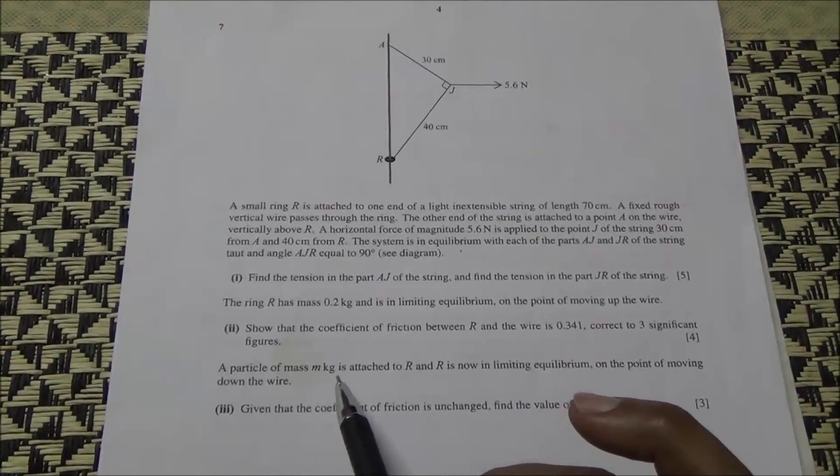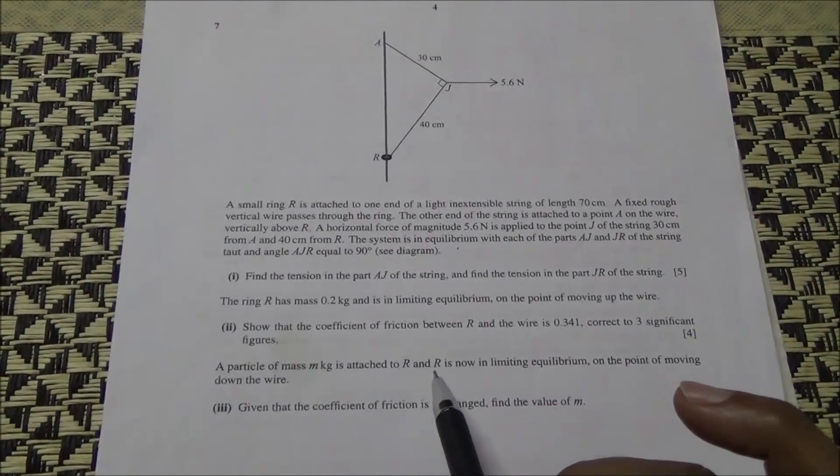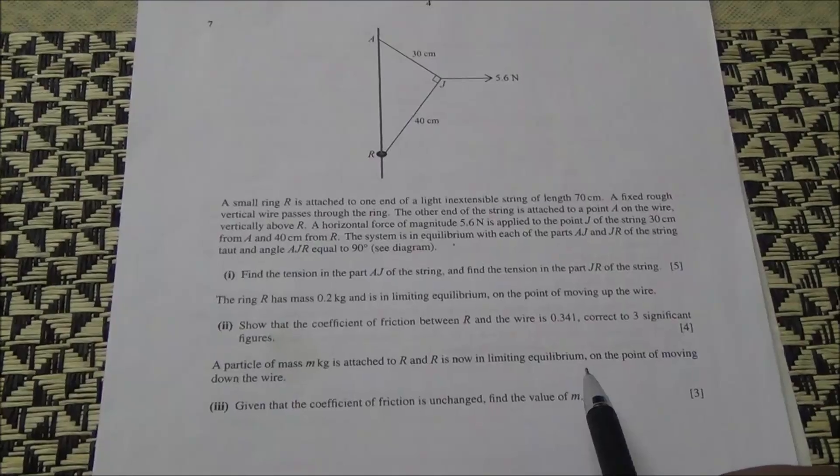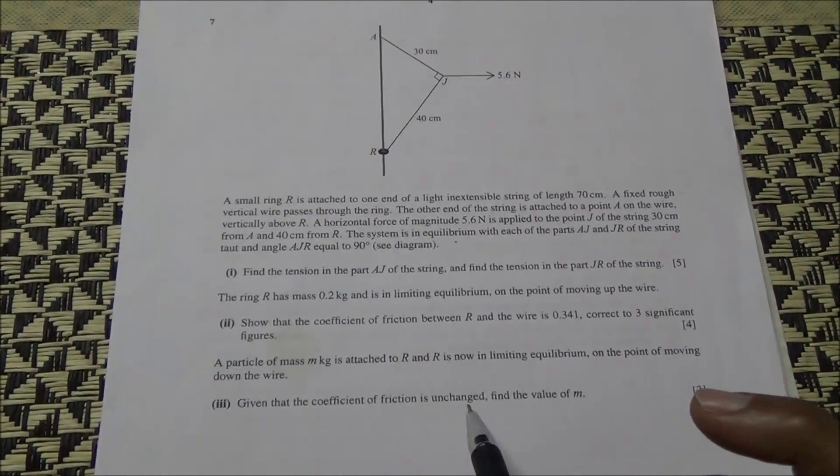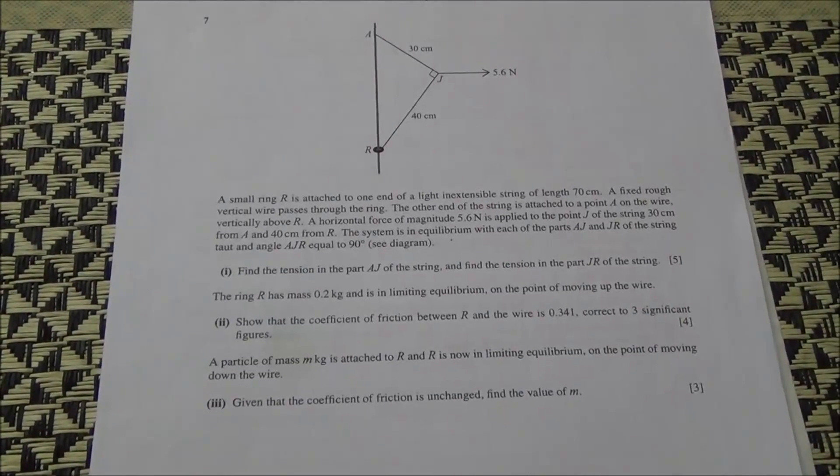Also, a particle of mass M kg is attached to R and R is now in limiting equilibrium on the point of moving down the wire. Given that the coefficient of friction is unchanged, find the value of M.